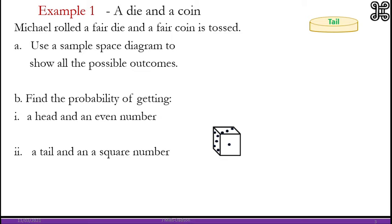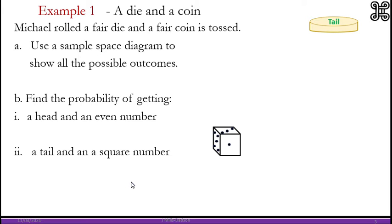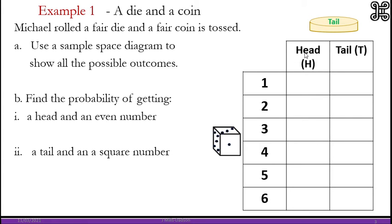Now it's best to use sample space to help you understand all the possible outcomes. We are supposed to use sample space to list the outcomes and work out probability for getting a head and an even number and getting a tail and a square number. This is your sample space for a coin. It could be a head or it could be a tail. Then this is your sample space for a die. Always leave this box blank.